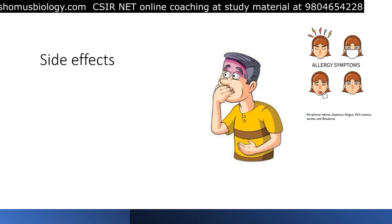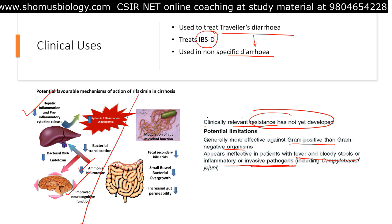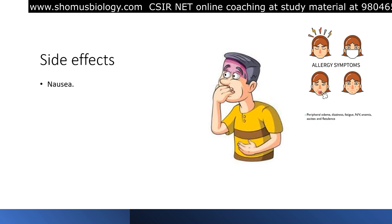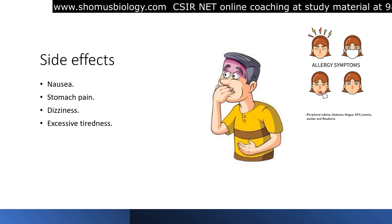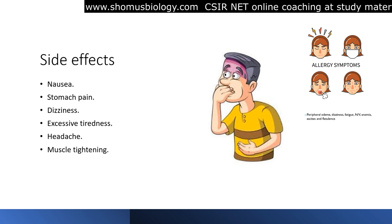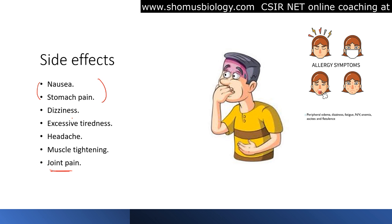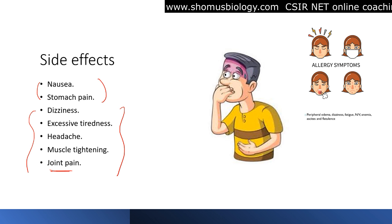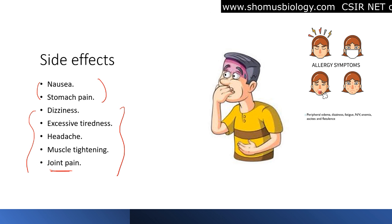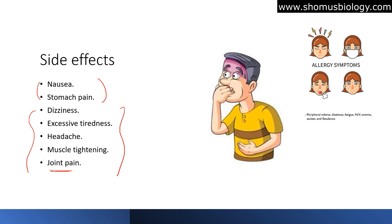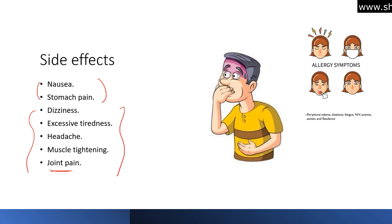Now let's talk about the side effects of rifaximin. It is well tolerated and resistance is not much developed. Side effects are limited and include nausea, stomach pain, dizziness, excessive tiredness, headache, muscle tightening, and joint pain — with joint pain being rare. Unlike most antibiotics, rifaximin is not associated with abdominal cramp, distress, or diarrhea, because rifaximin itself works to prevent diarrhea. Although it is costly, it works really well against IBS and is the antibiotic of choice for IBS-D patients.